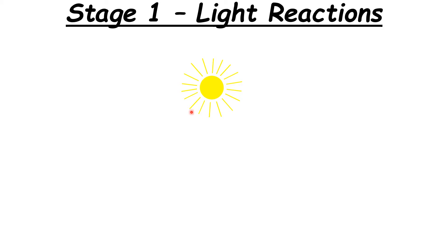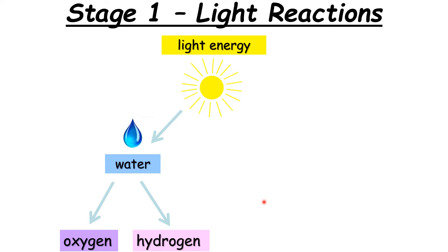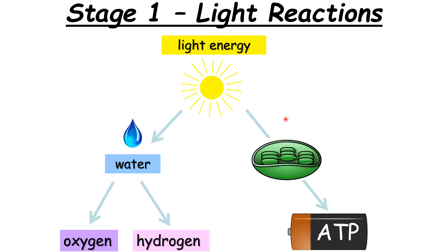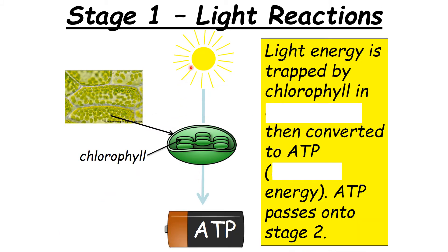In the light reactions, sunlight does two things. First, water (H₂O) is split into its constituent elements — oxygen and hydrogen. Second, light energy is converted into chemical energy in the form of ATP. These processes happen via the chlorophyll pigments within the chloroplast. So in summary: light energy is trapped by chlorophyll in the chloroplast and converted to ATP.